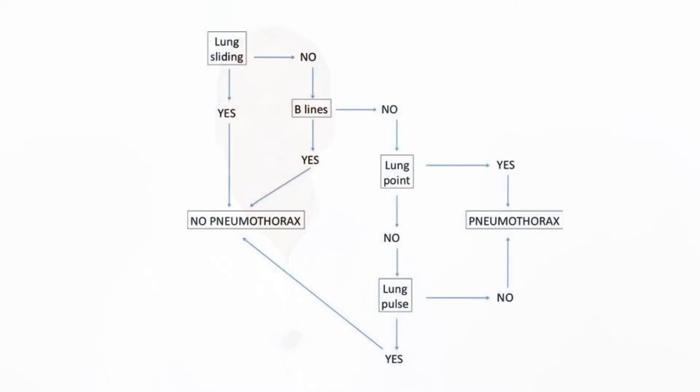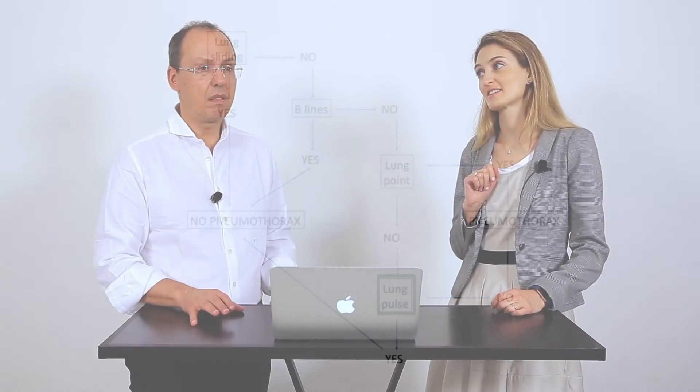It's just a sign that allows you to rule out pneumothorax. If you don't see the lung sliding but you see the pulse, you can exclude pneumothorax. Correct! Is it the same role that lung sliding and B-lines have in ruling out pneumothorax? Yes, it is exactly the same role.